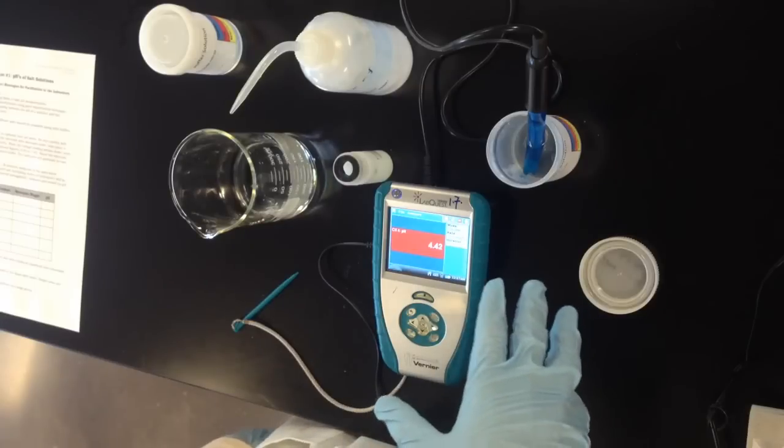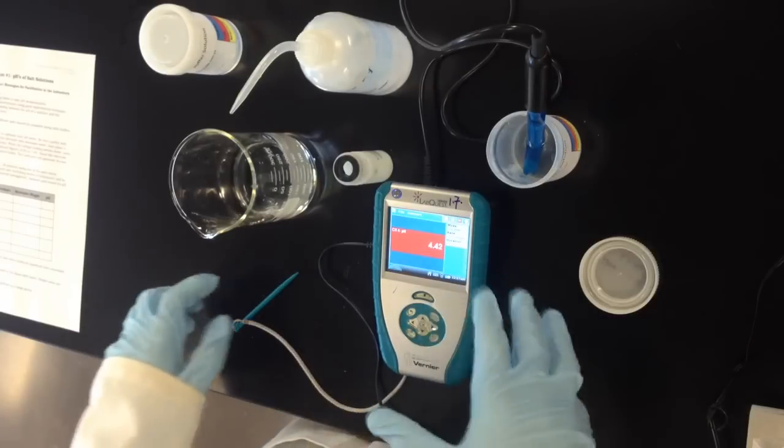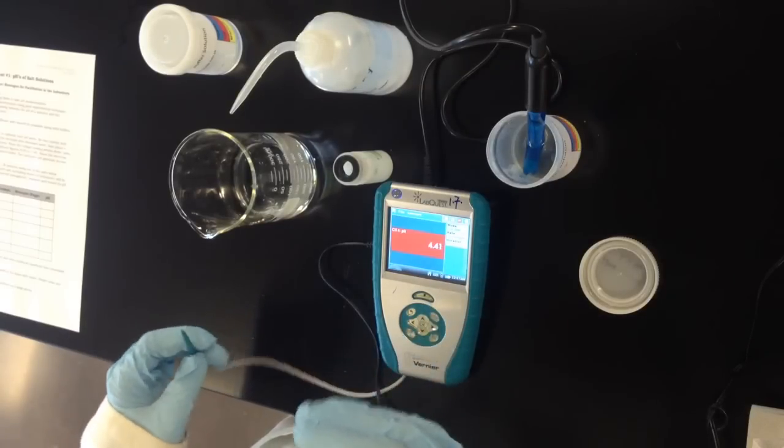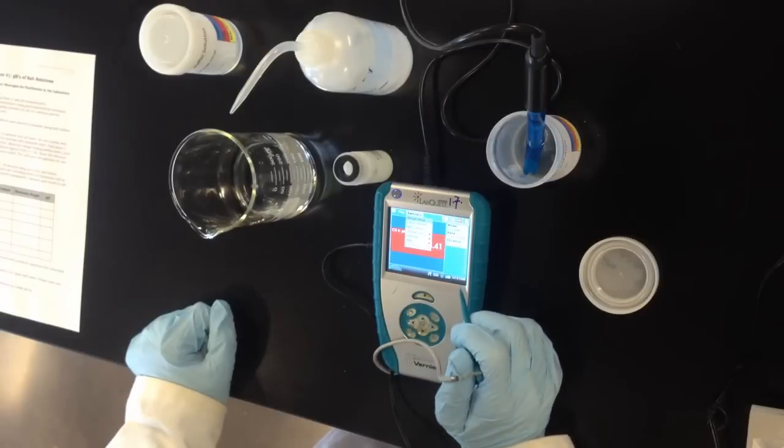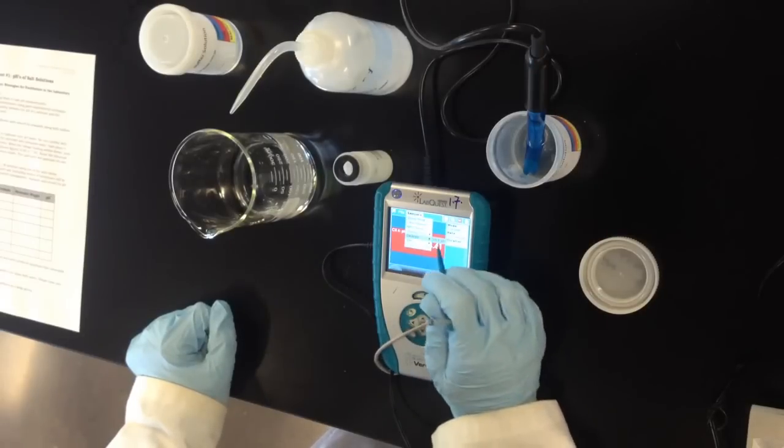You should allow the pH buffer to settle for about 30 seconds. It takes a while for the voltage there to settle. So at this point I can go to sensors, calibrate, pH.